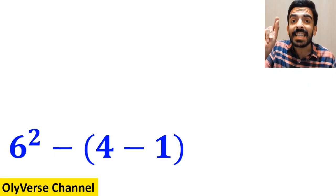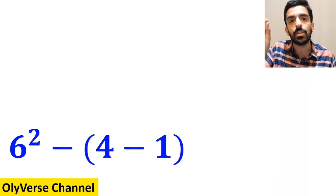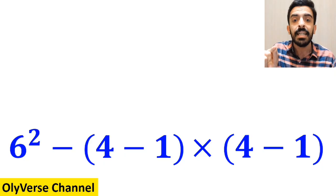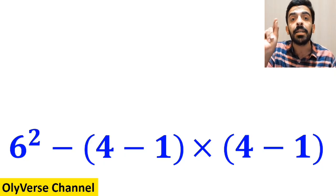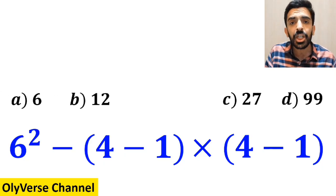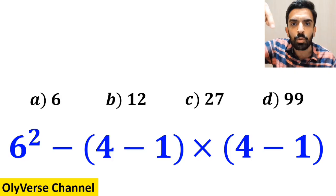What is the value of the expression 6 squared minus 4 minus 1 inside the parenthesis, then multiplied by 4 minus 1 inside the parenthesis again? Which option do you think is the correct answer to this question?